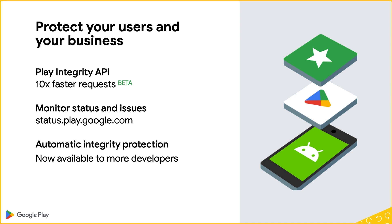And finally, we released a new version of automatic integrity protection called Dynamite, which introduces stronger protection for native-heavy games. Enable it in Play Console for Play's protection against tampering and piracy without the need to integrate an API in a backend server. To learn more about these features, check out the links in the video description.